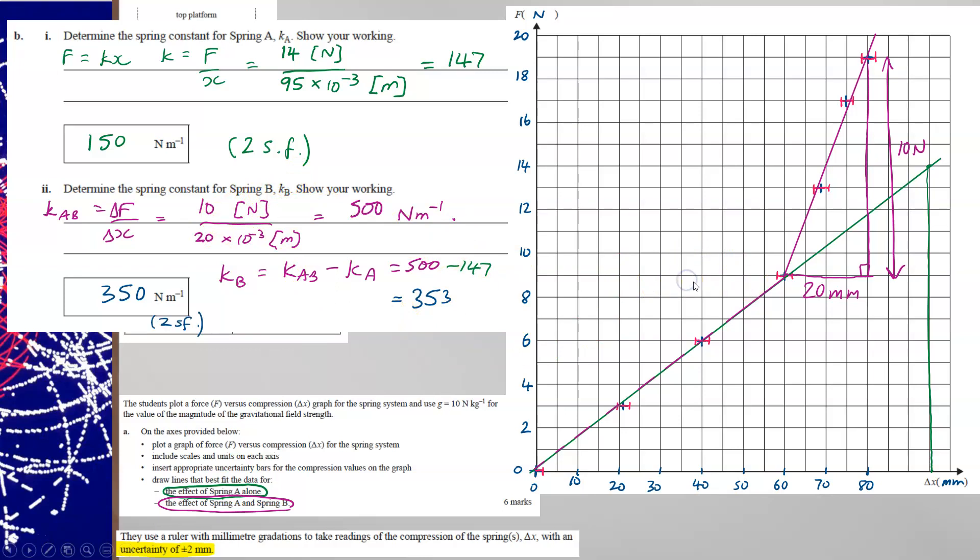And that's to consider that between here and here, spring B has compressed as well as spring A. Now spring A has... don't forget the two spring systems have compressed by 20 millimetres in that time. So the compression of spring B is still 20 millimetres. But of these 10 newtons of force, three newtons has been supported, would have been supported by spring A.